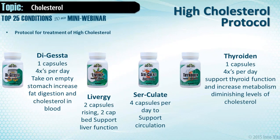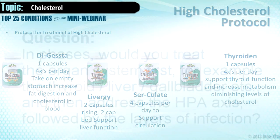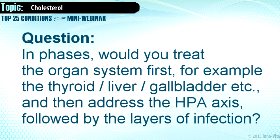Generally speaking — and always confirm with kinesiology — rough dosing suggestions are: Digesta, one capsule four times a day, two on an empty stomach and two with food. Liver G, two capsules upon rising and two capsules in the evening on an empty stomach so the body absorbs it more effectively. Circulate, four capsules a day. Thyroidin, one to four capsules. Don't just go off these recommendations — always check with kinesiology and muscle testing, as every person is different.